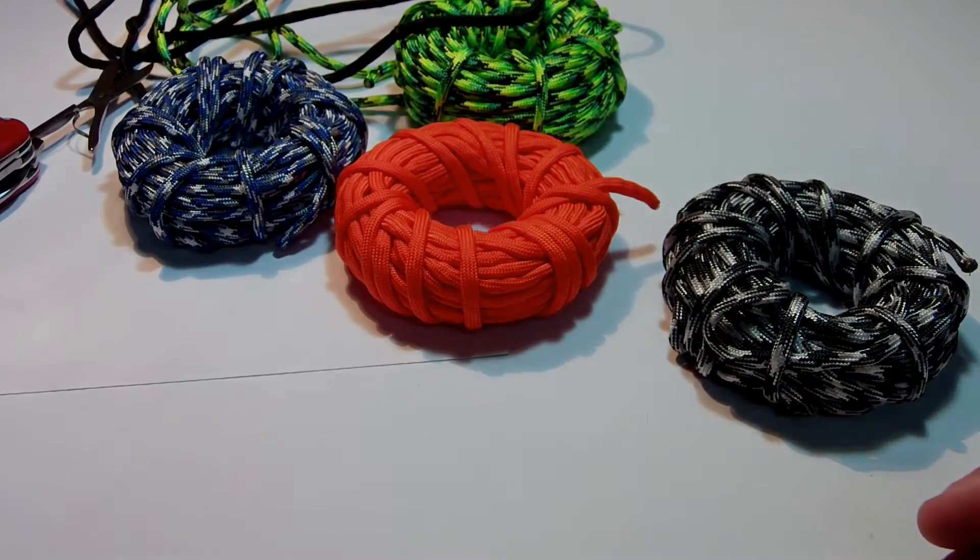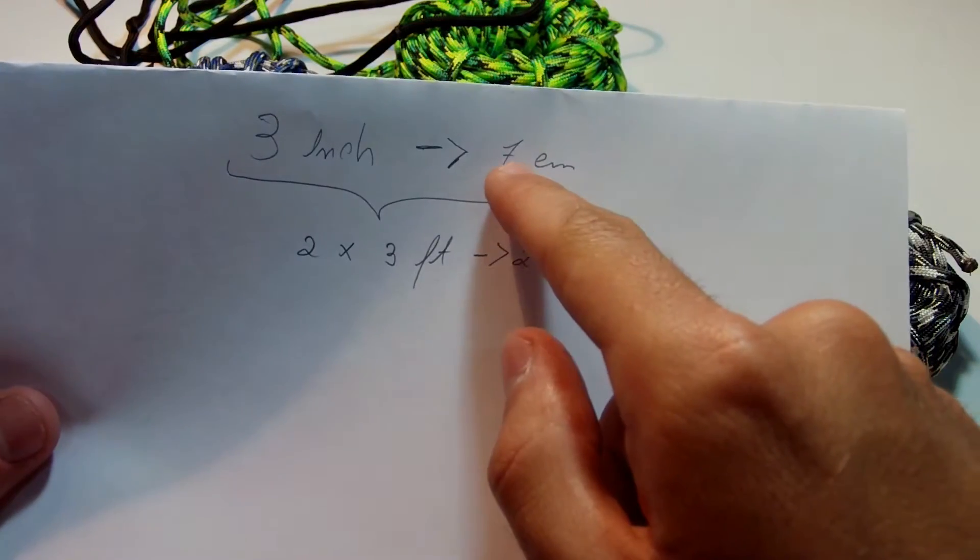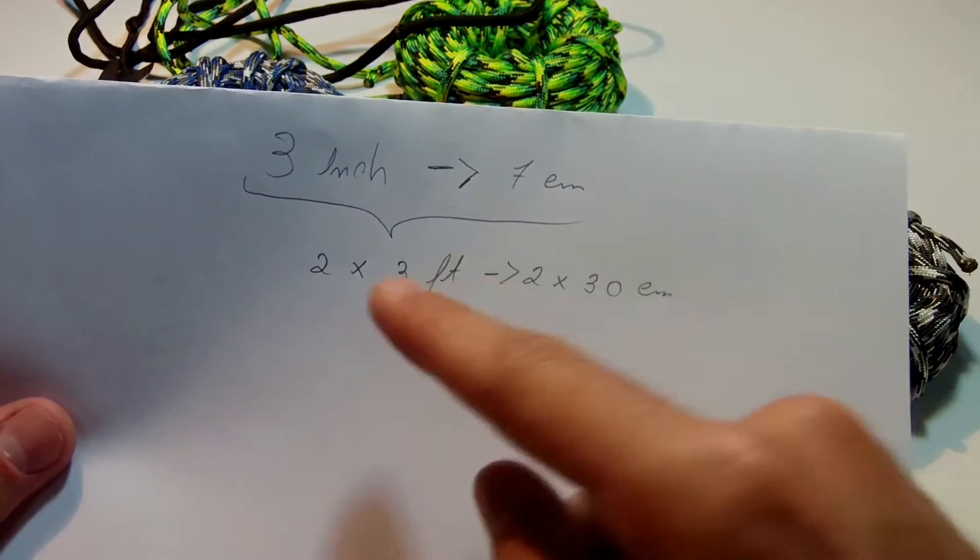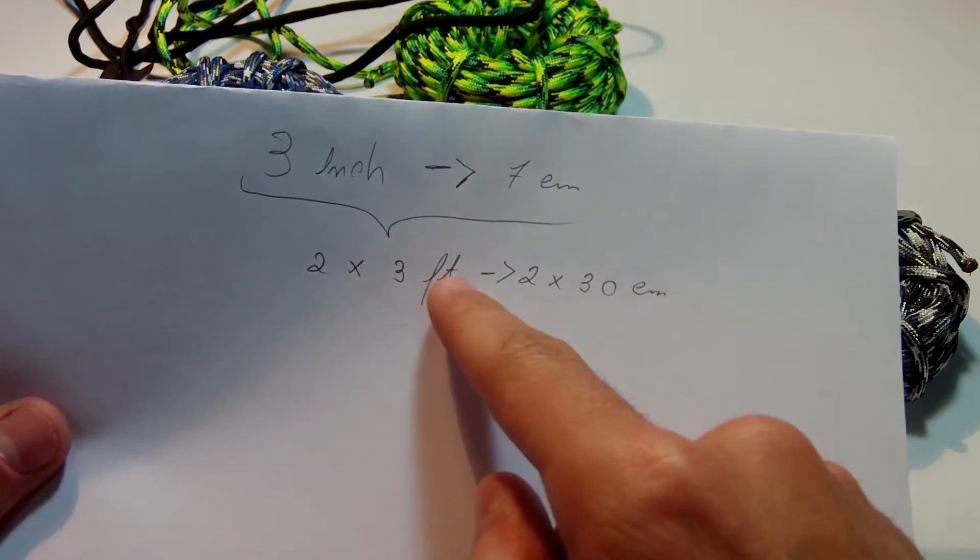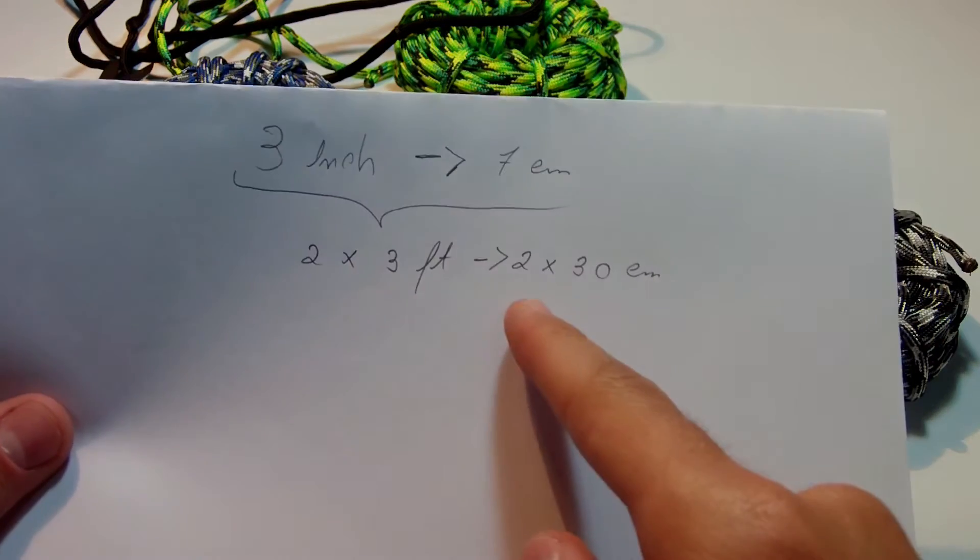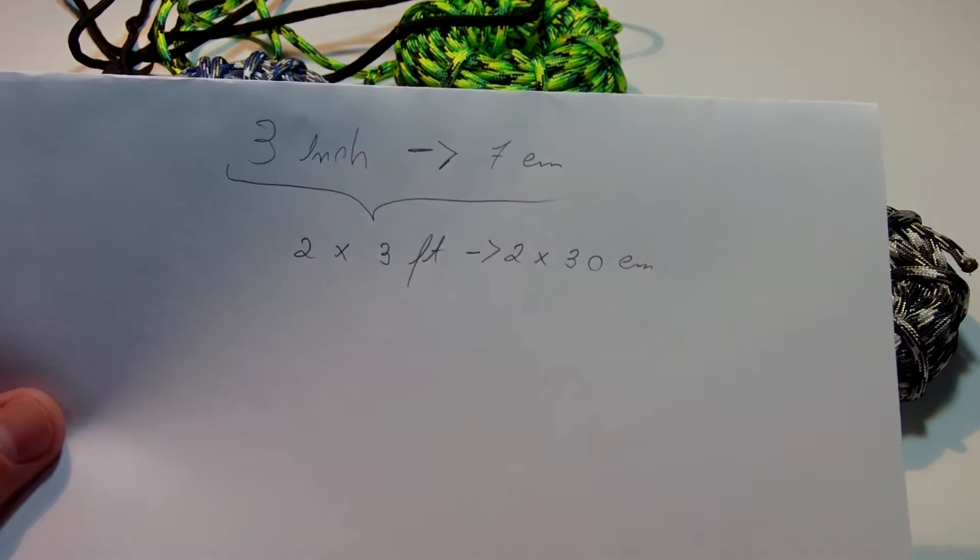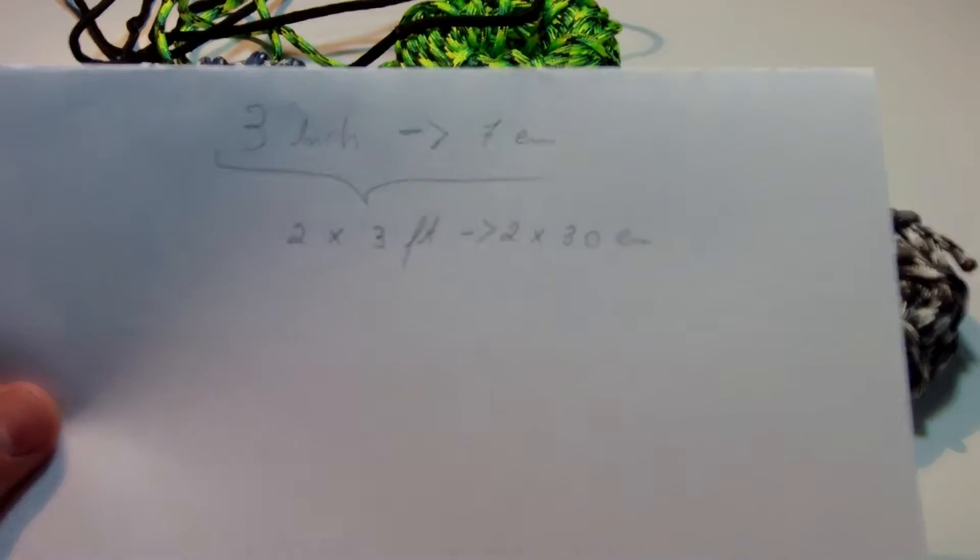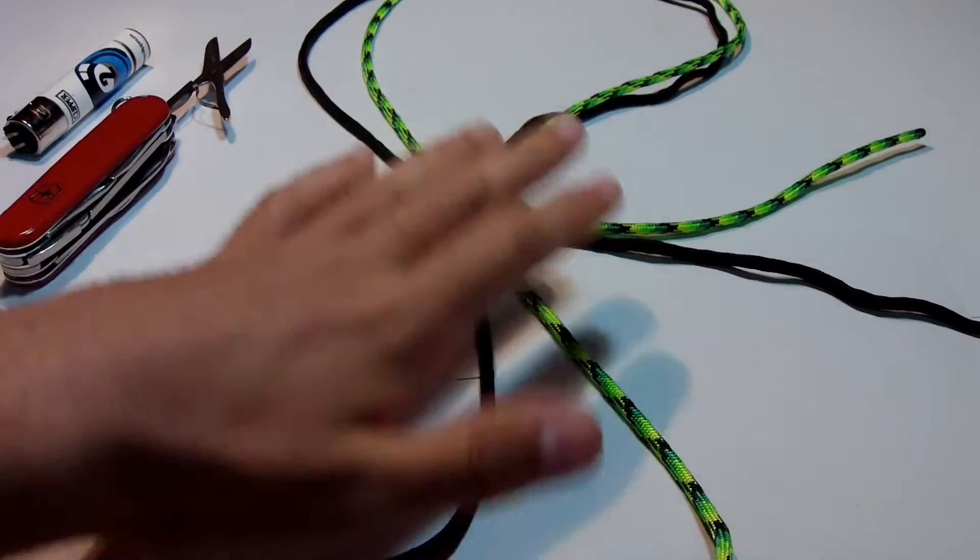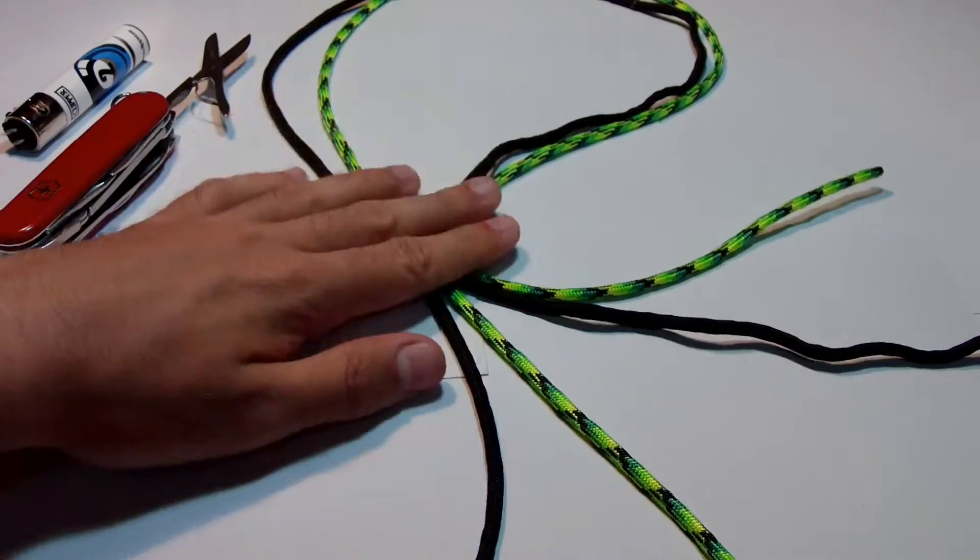And to make this lanyard, you need to know that for three inches, which is seven centimeters of lanyard, you will need two times three feet, which is the two colors black and the green. So two times three feet, which is the same thing as two times 30 centimeters. That's what we need to do this project. We have all of our tools, the paracord cut to the length that I want. Don't forget to use a ruler to check the measurements.